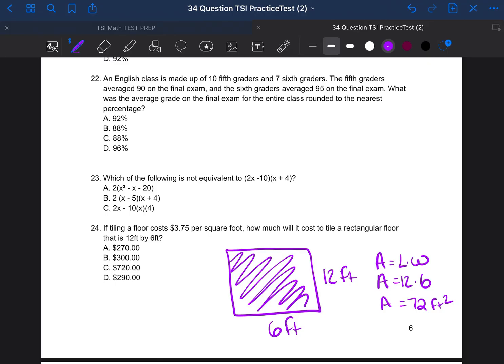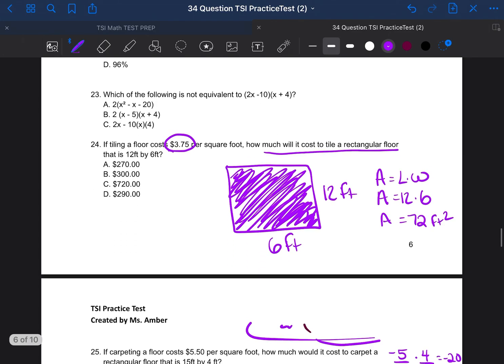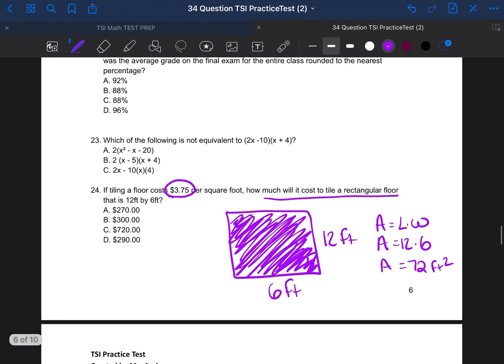Okay, so now that I know the area of what I'm carpeting, because when you're carpeting, you're covering the entire area of the floor. However, how much would it cost if it's $3.75 per square foot? So I'm going to take $3.75 times 72. So in this situation, they may give you a calculator. They may not. So let me show you both ways. So if they give you a calculator, just write 3.75 times 72, and you get $270. The answer is going to be A.